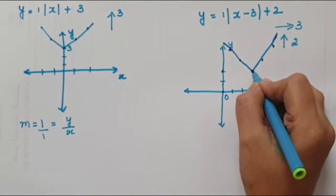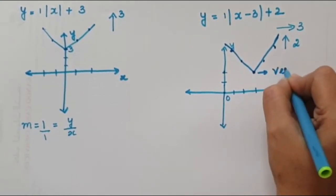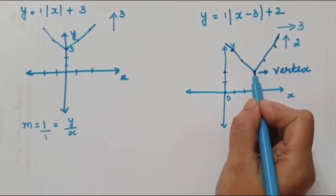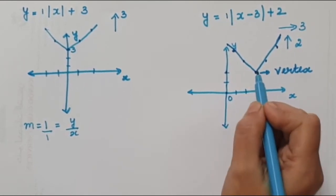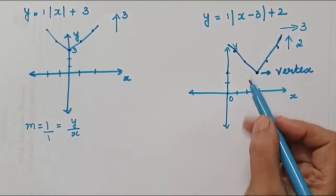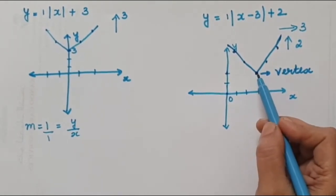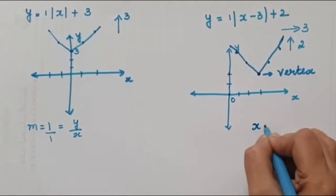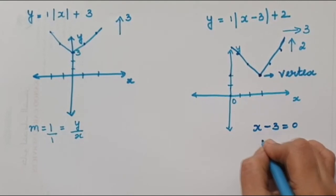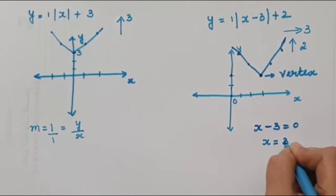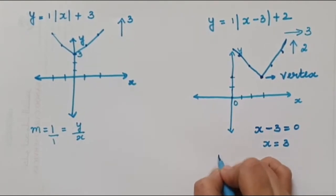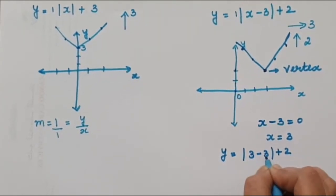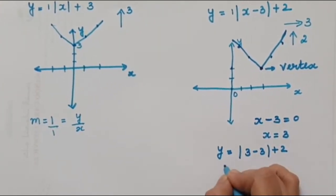This end point is called the vertex of the graph. If we can fix our vertex, it is easier to draw the graph. To find the vertex, we equate the expression inside the modulus to 0. For y = |x - 3| + 2, set x - 3 = 0, so x = 3. Substituting back: y = |3 - 3| + 2 = 0 + 2 = 2.